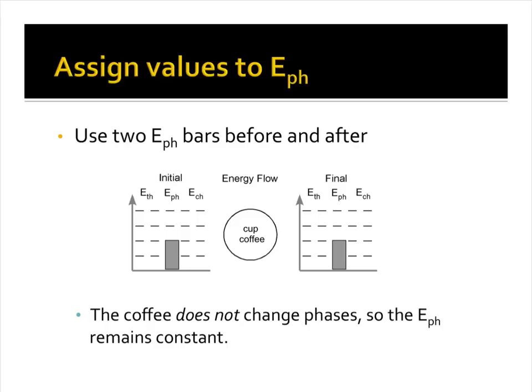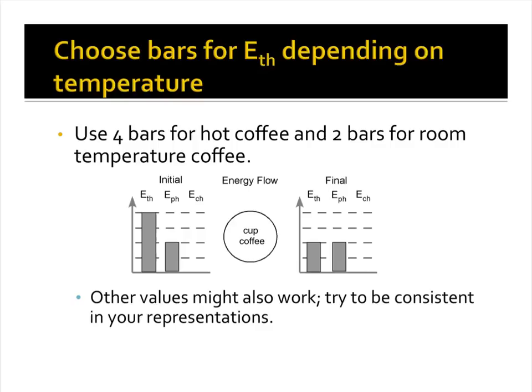With our coffee, we are not changing phase. We are liquid to begin with and liquid at the finish. So we have two bars in each of our graphs — in our before and our after.